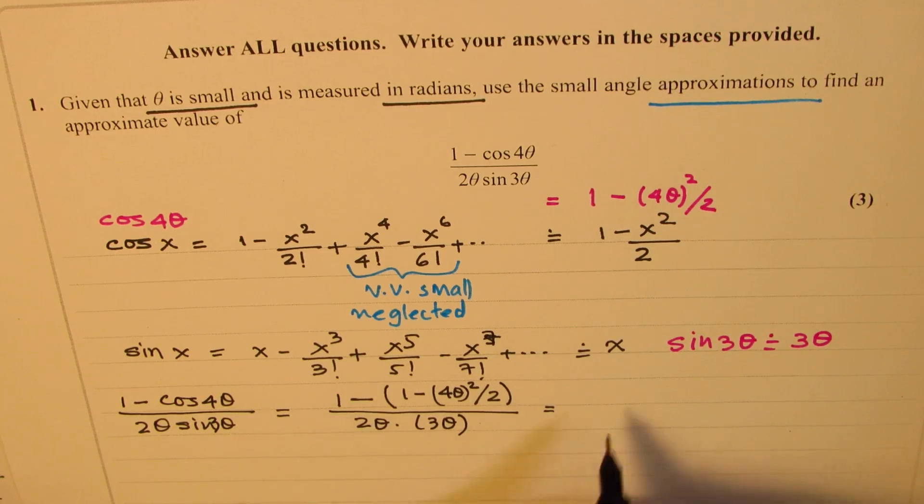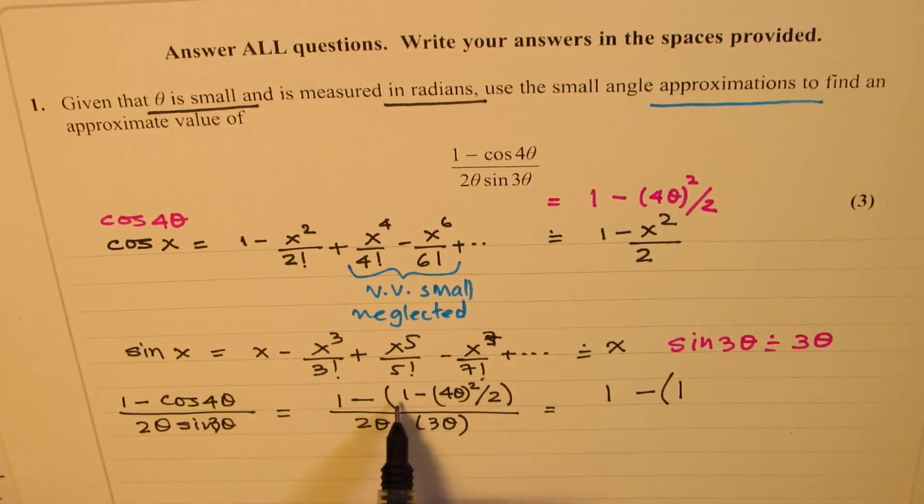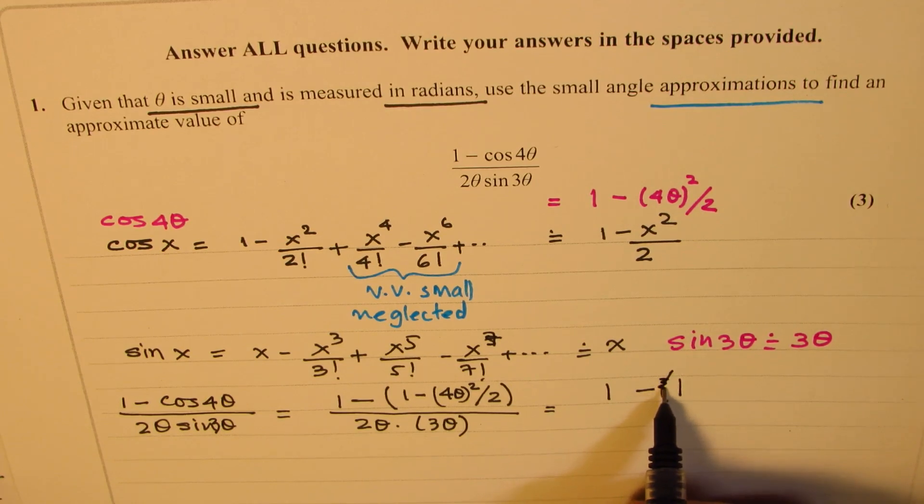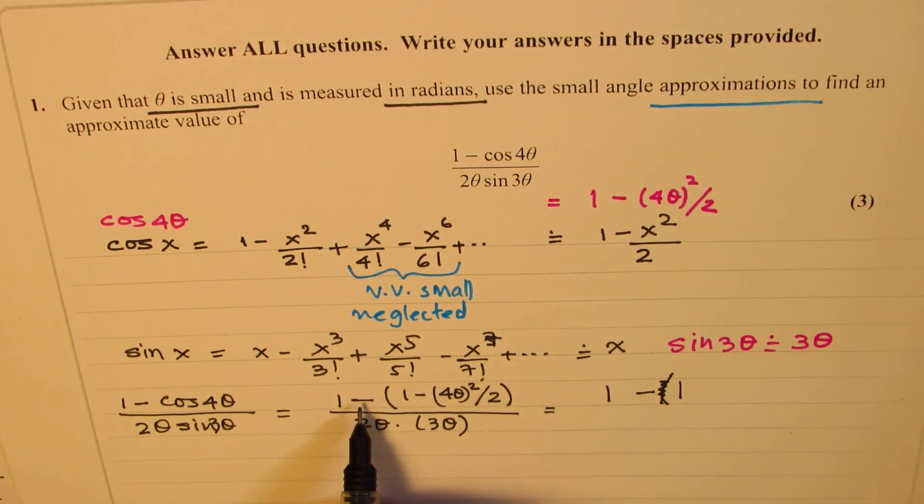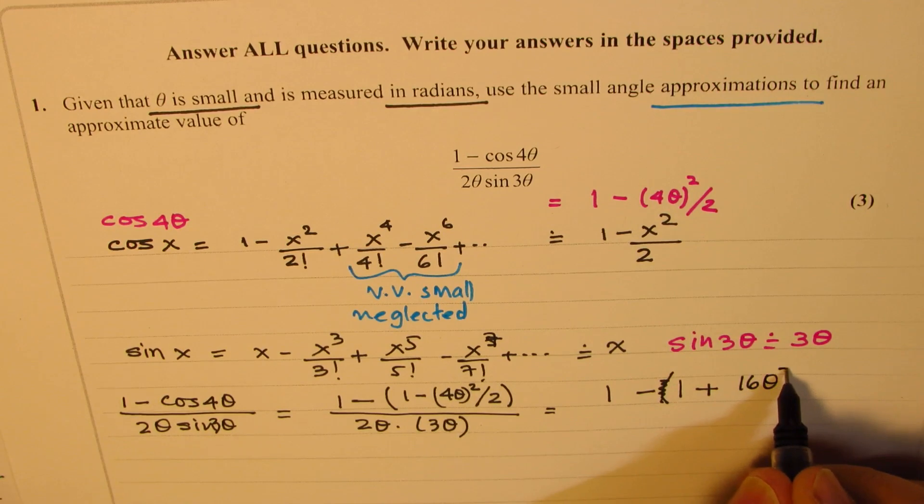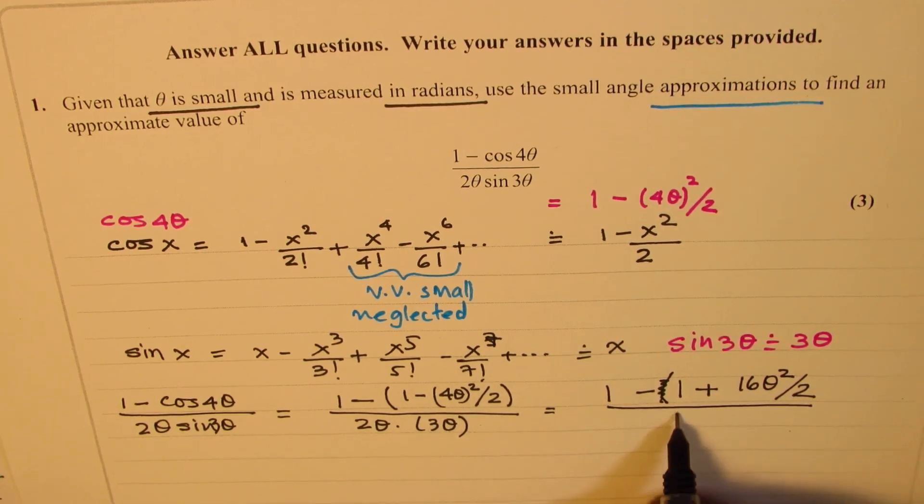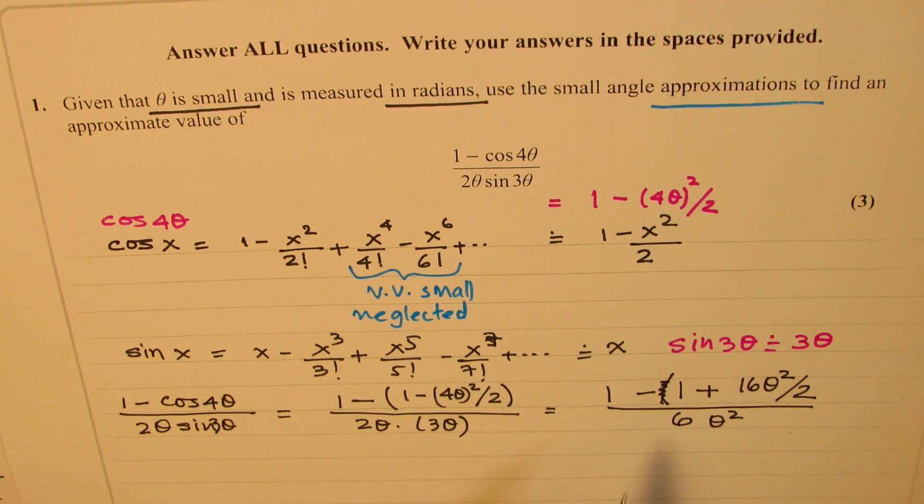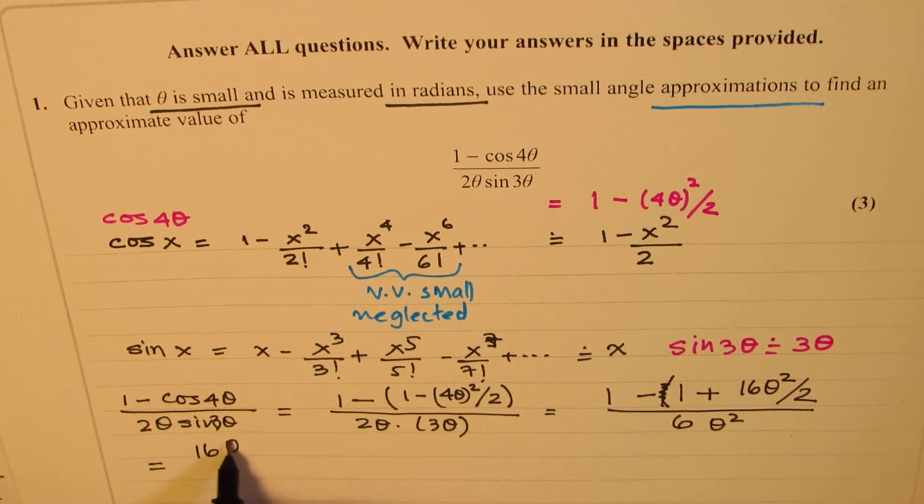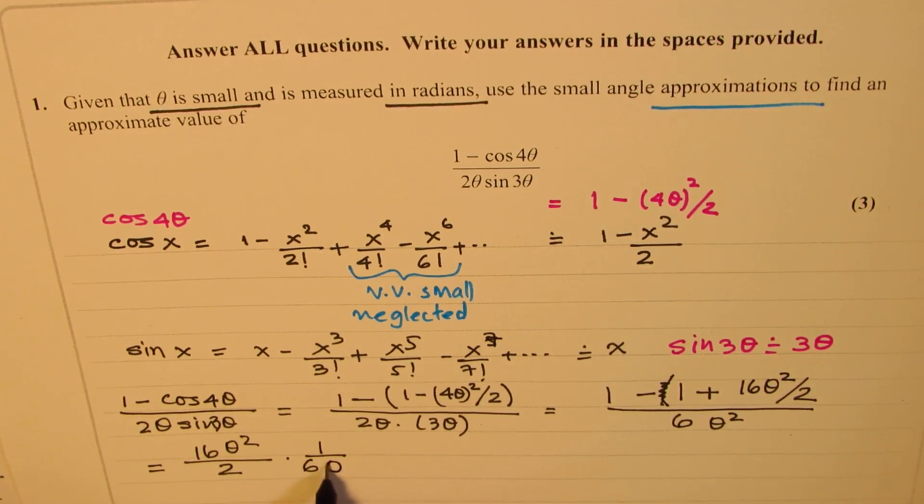Now let's try to simplify. So we have 1 minus within brackets 1. And when you open this, 1 minus 1 is 0. So let's open this bracket. So we have 1 minus 1. And when you open, that becomes plus. So we get plus. 4 square is 16. So we get 16 theta square divided by 2 over 2 times 3 is 6 theta square.